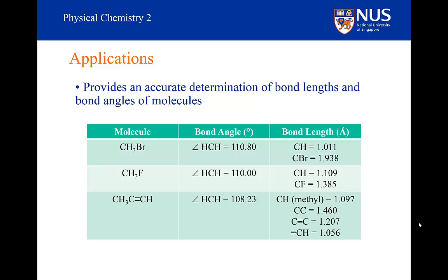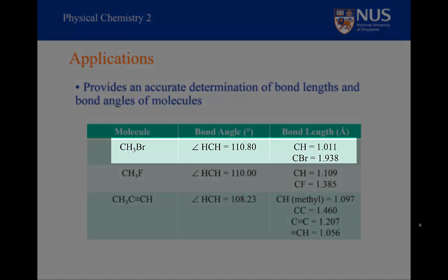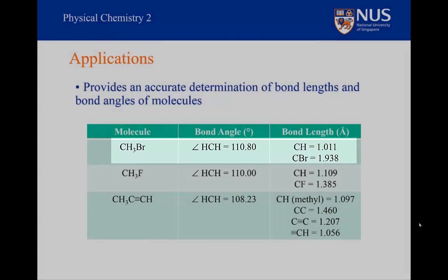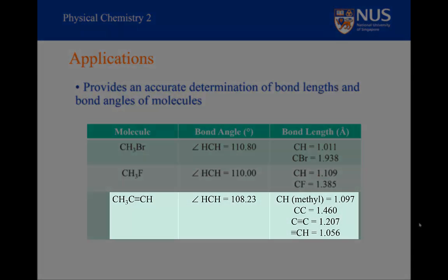We can get information for molecules such as methyl bromide — bond angles and bond lengths — and for methyl acetylene we can get information about the bond angles in the methyl group as well as the bond lengths in the system, all very precisely.